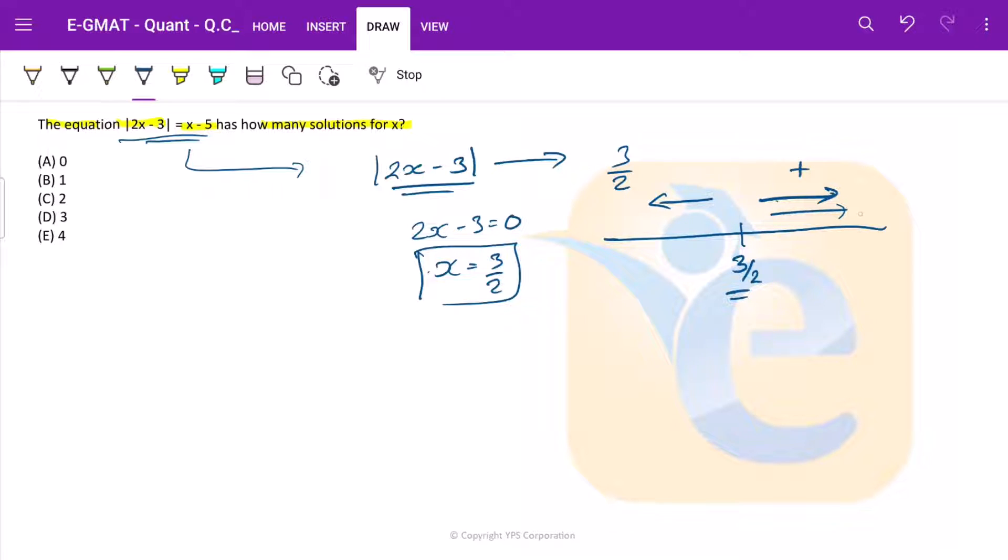In this space it would be positive. Any value greater than 1.5, 3/2, say for example 5. If you put 5 here, this becomes 10 - 3 = 7, so this is positive. Now if we have a value that is less than 3/2, say for example 0, this will be -3. So this is a negative number but it is a modulus.